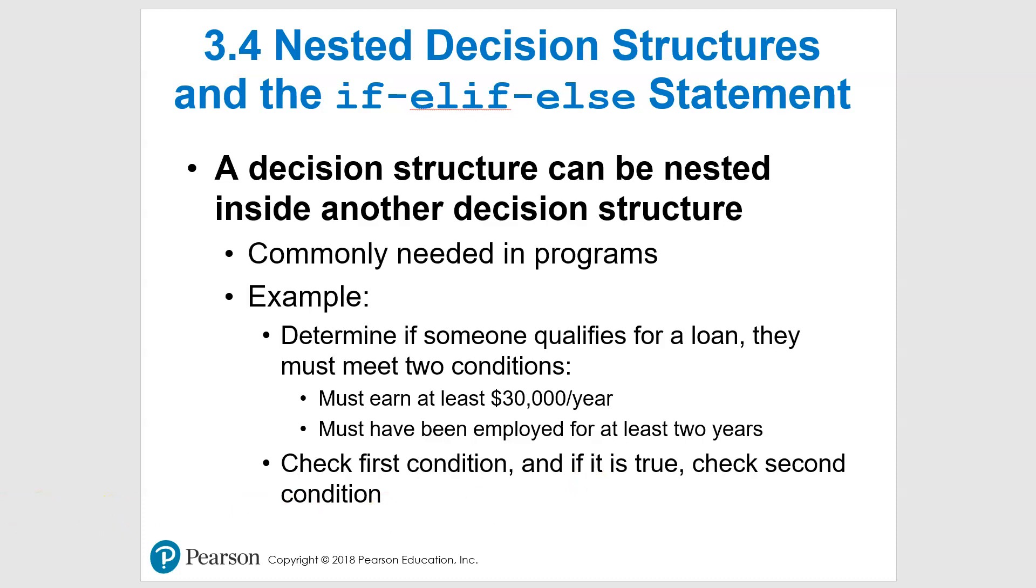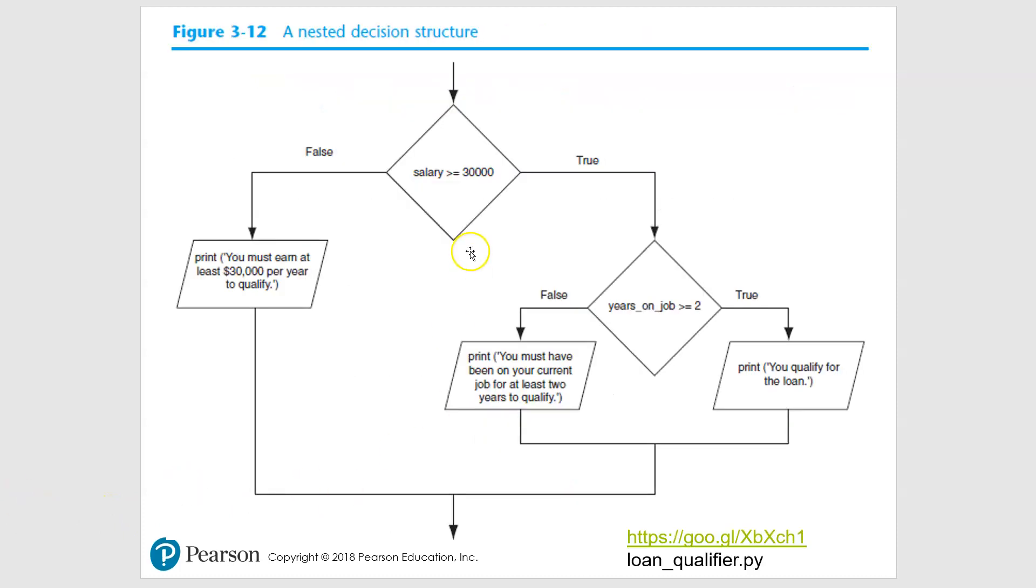So how does this work? Let's take a look. Here's our first test, salary greater than or equal to $30,000. If it's false, you must earn at least $30,000 to qualify. If it's true, it will go down. It will ask, here's our second condition, years on the job greater than or equal to two.